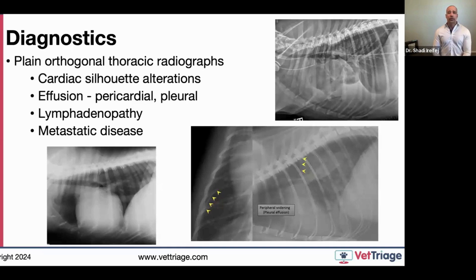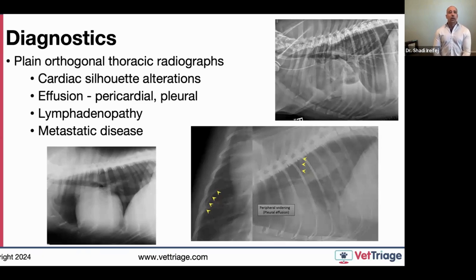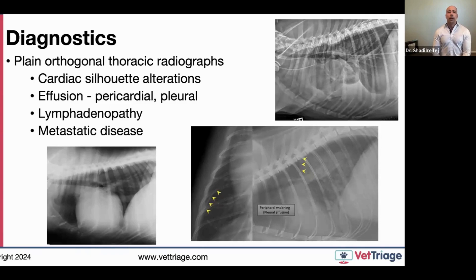Don't forget your metastasis checks — three-view thoracic radiographs are imperative in the workup. You're looking for changes to the cardiac silhouette, such as pericardial effusion or tamponade from a metastatic cardiac lesion. Also look for pleural fissure lines indicating pleural effusion, sternal or pericardial lymphadenopathy, and pulmonary or spinal metastases visible on thoracic radiographs.